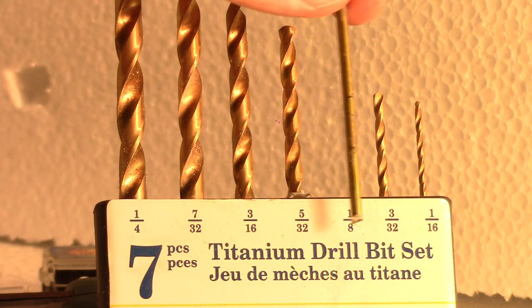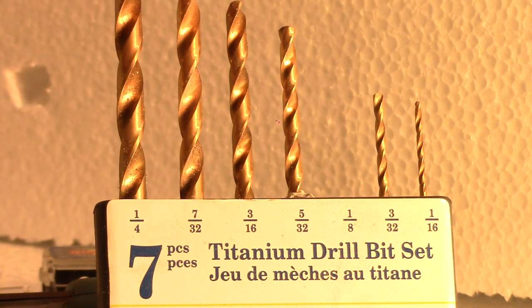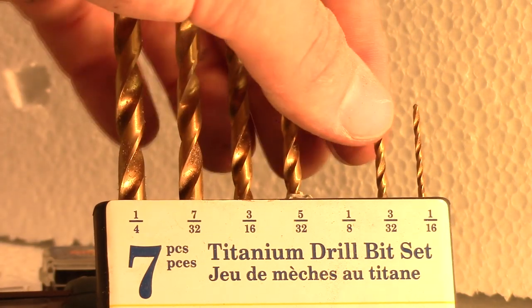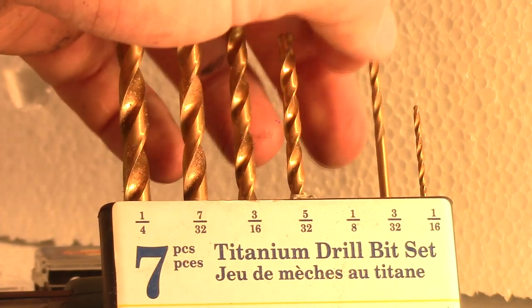Next you will need to find a drill bit that matches the diameter of the coat hanger wire. In this case I am using the 3/32nd bit. Then place it in your drill chuck and you are ready to go.